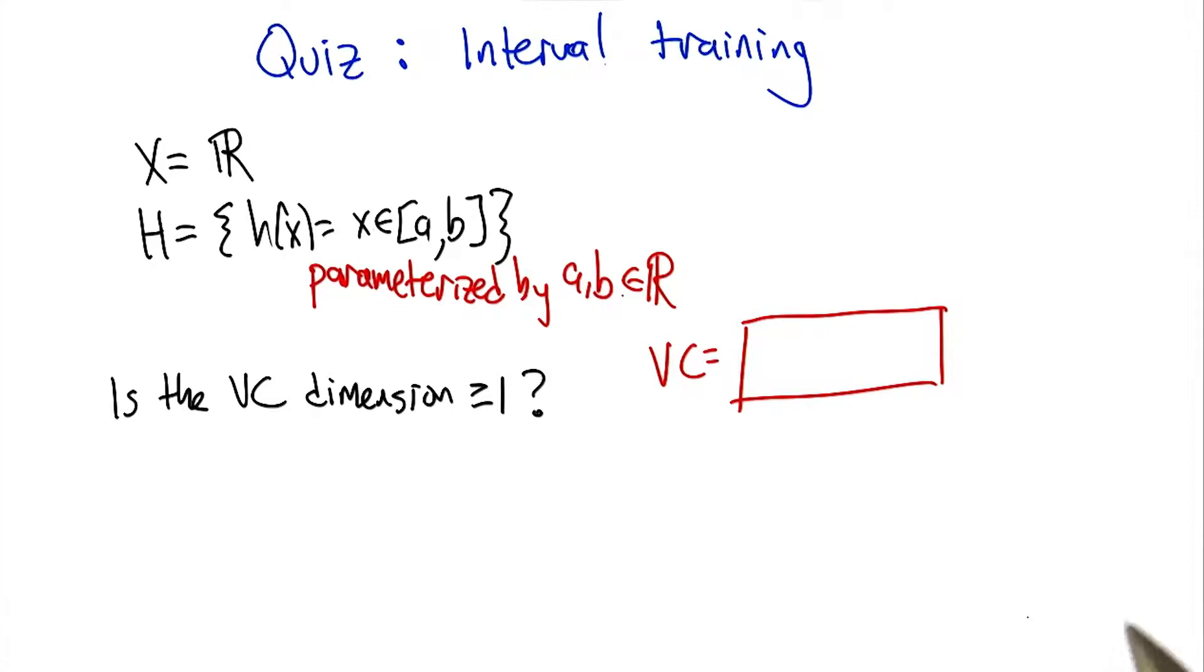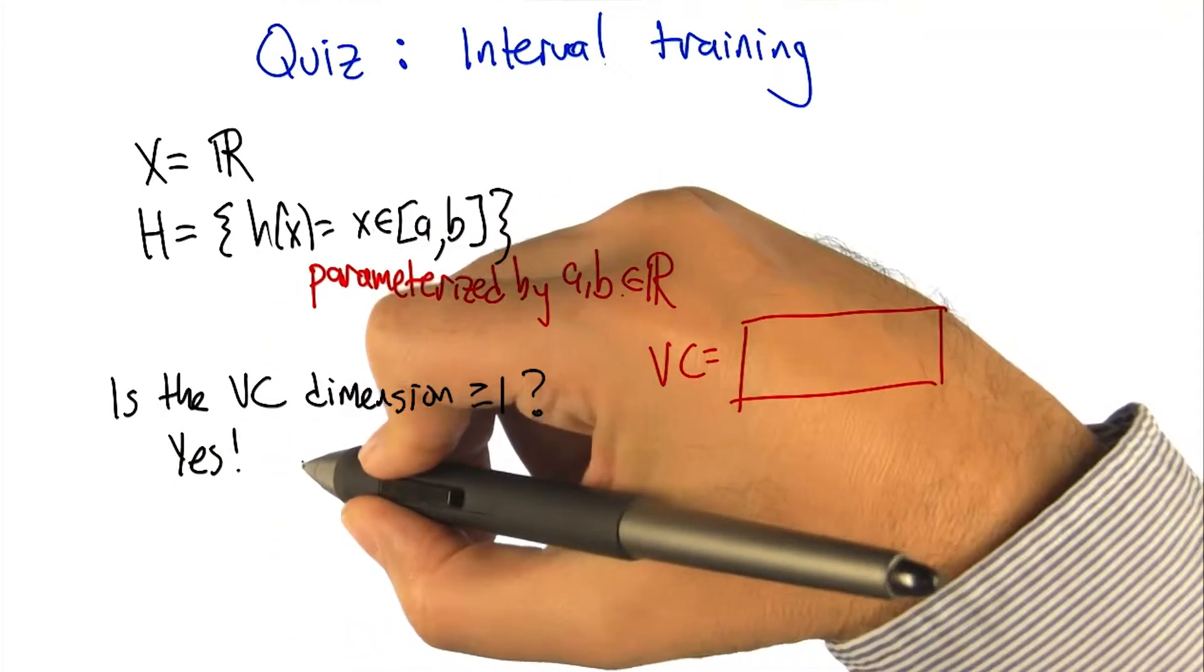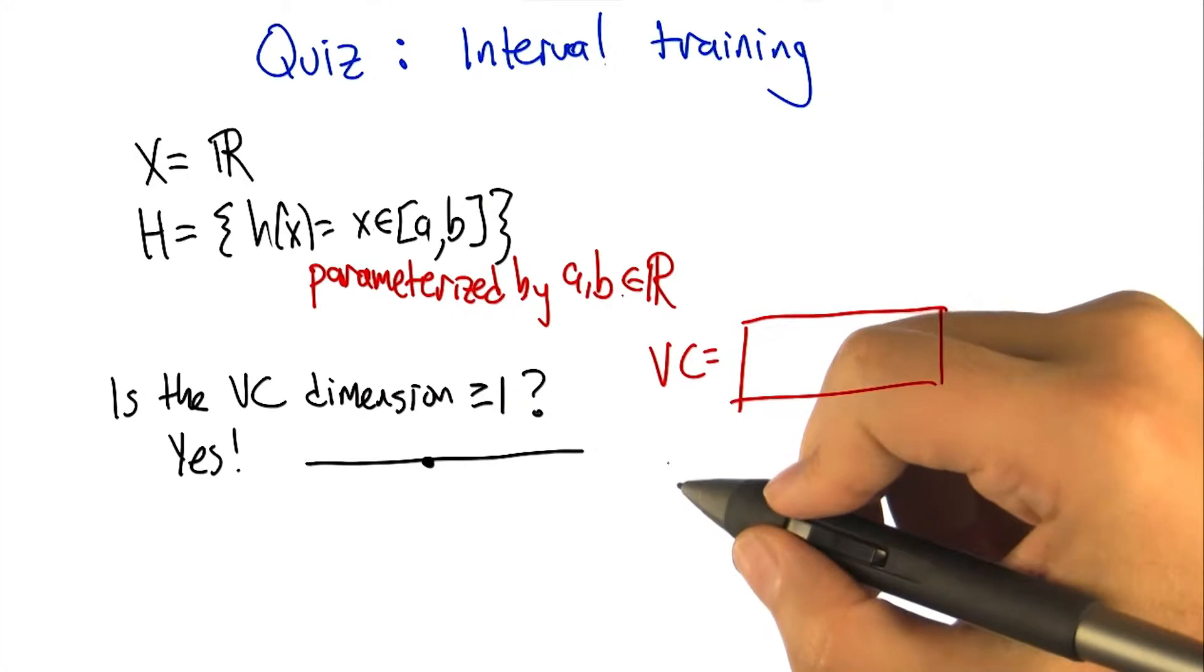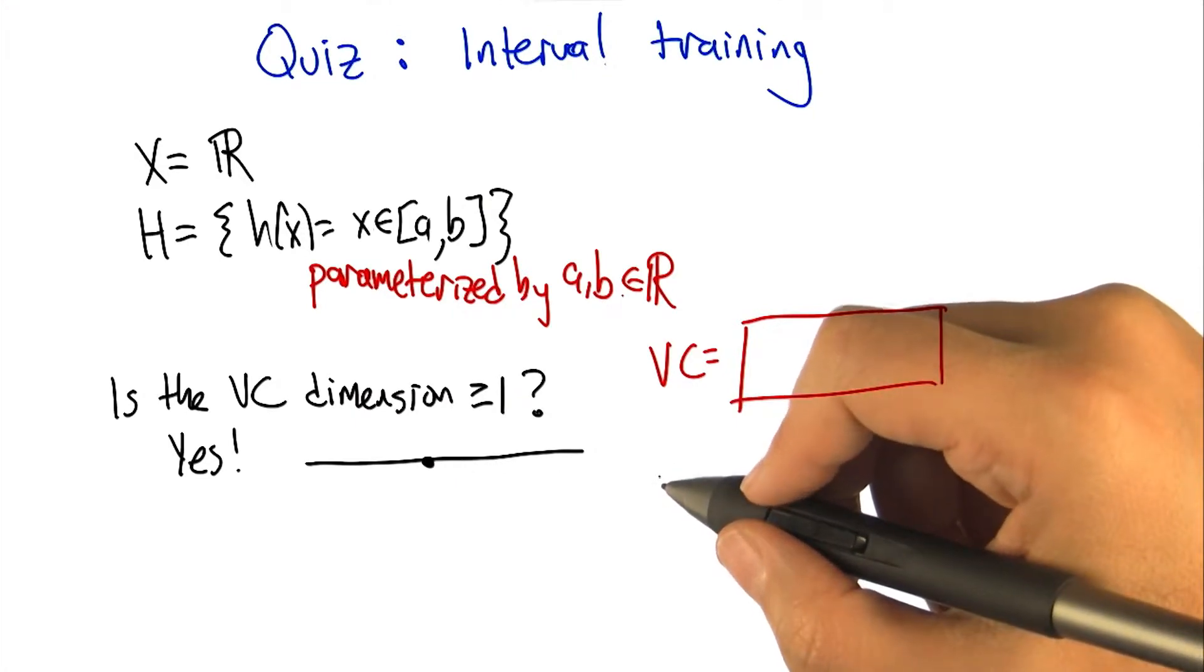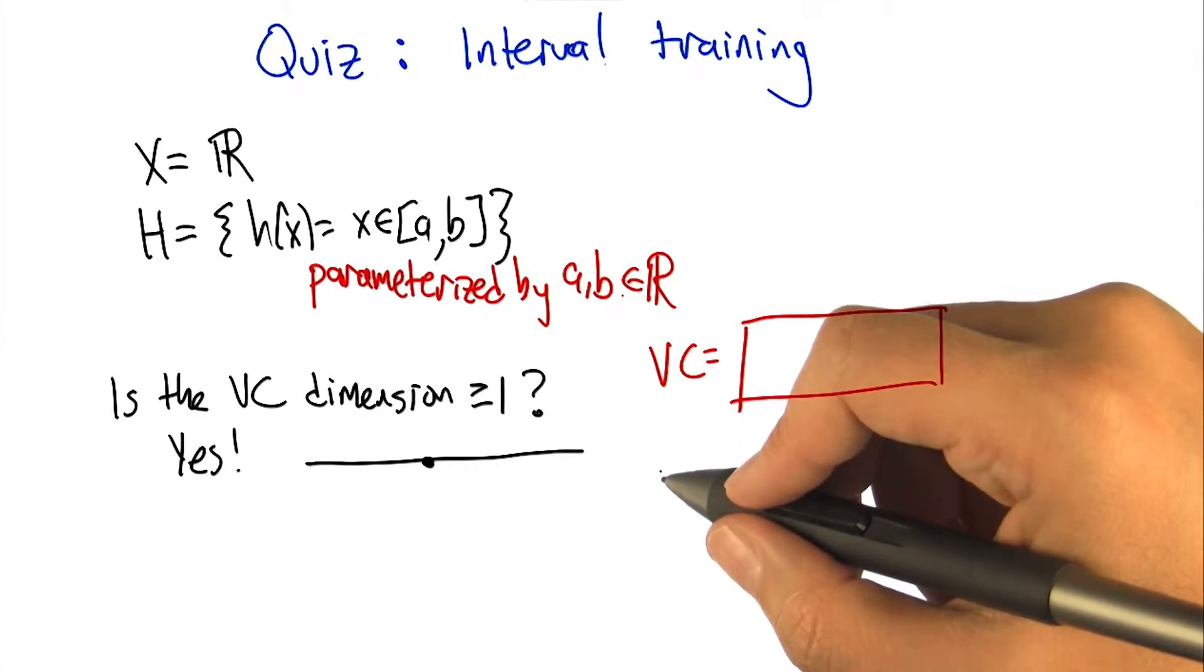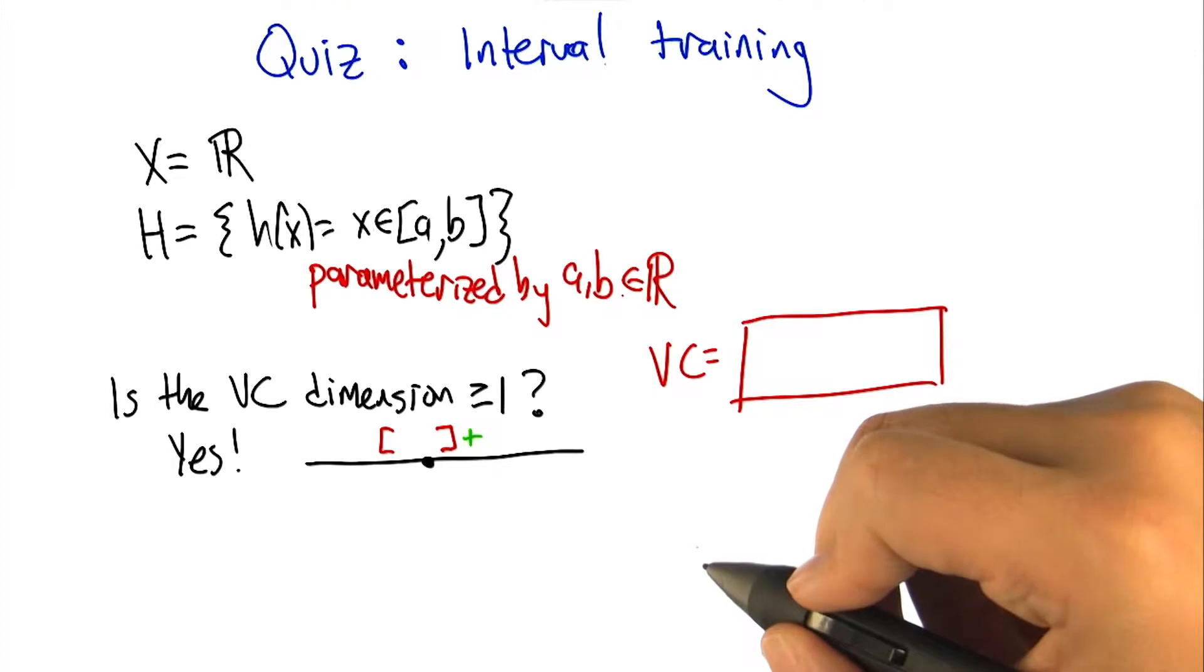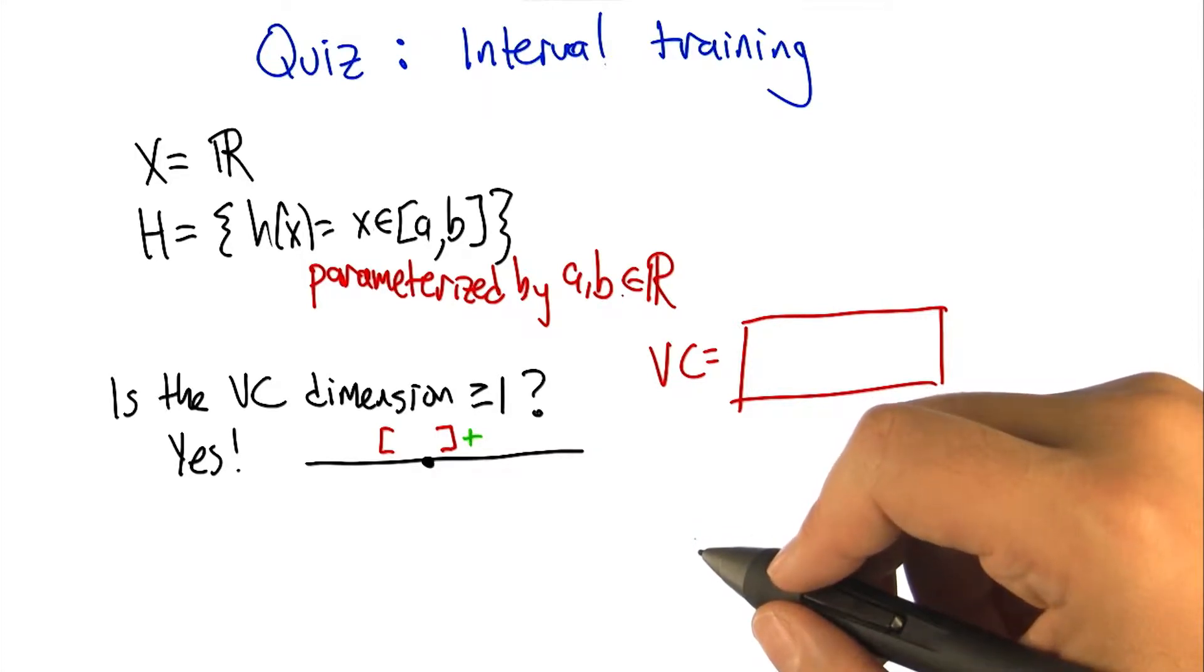Okay, so is the VC dimension at least one? Well, the answer is pretty clearly yes. If you just put a dot on the number line somewhere, you could label it positive just by picking any a less than or equal to that point, and any b greater than or equal to that point. So if I were drawing parentheses or something to indicate the interval, I could just put parentheses around the point, and that would give me a plus. Or brackets. That would be fine. And if I wanted it to be negative, I could just put both of the brackets on either side of the point, it doesn't matter. Let's say to the left.